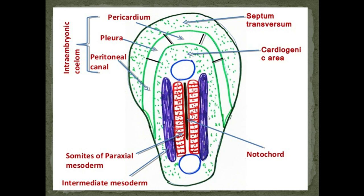After the paraxial mesoderm is the intermediate mesoderm — shown in blue — and then the lateral plate mesoderm. In the lateral plate mesoderm there is formation of a cavity giving rise to important structures: the cardiogenic area, pericardium covering the heart, pleura covering the lungs, the peritoneal canal, and the unsplit part is the septum transversum.